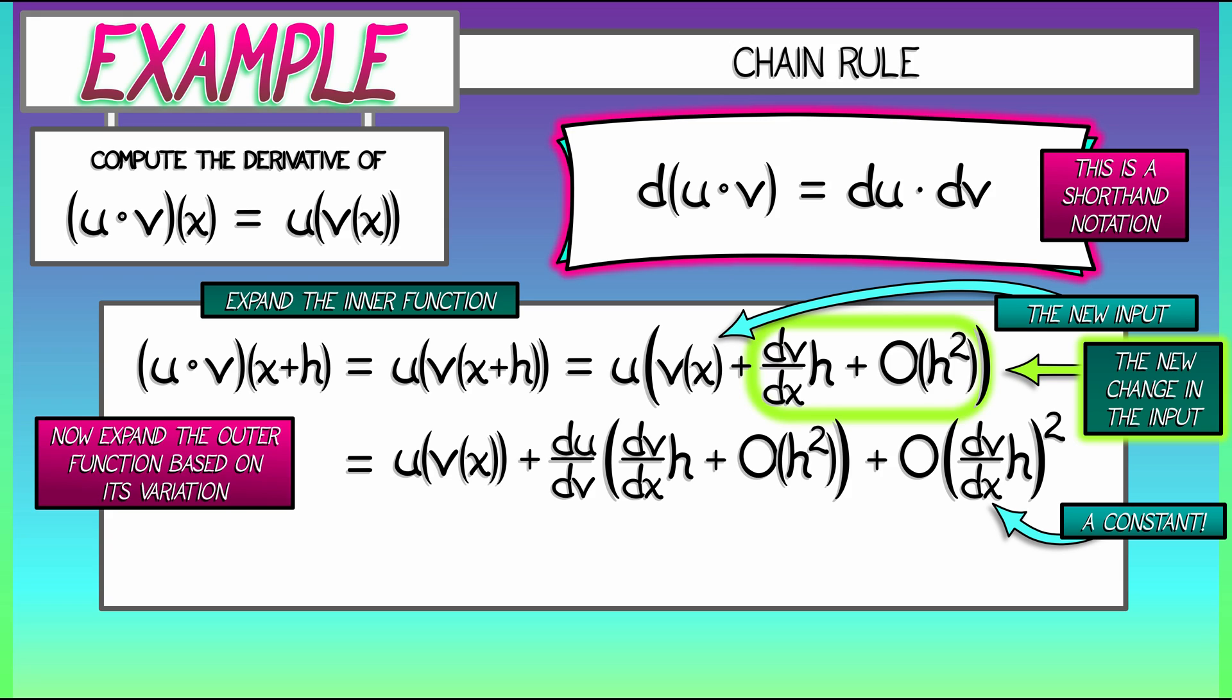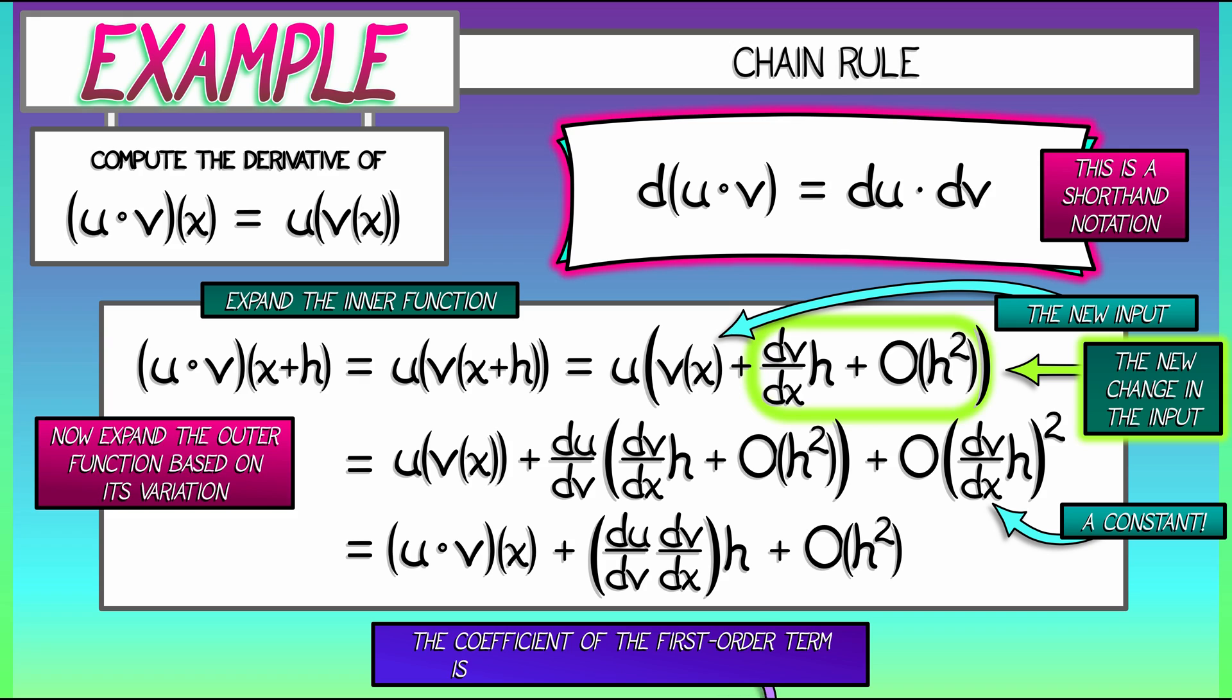To simplify this out, we go term by term. The zeroth order term is u composed with v at x. The first order term, the term that just has one h in it, is du/dv times dv/dx. Everything else is in big O of h squared. And that coefficient of the first order term, du/dv times dv/dx, that's it. That is the derivative, and that's the justification for the chain rule.